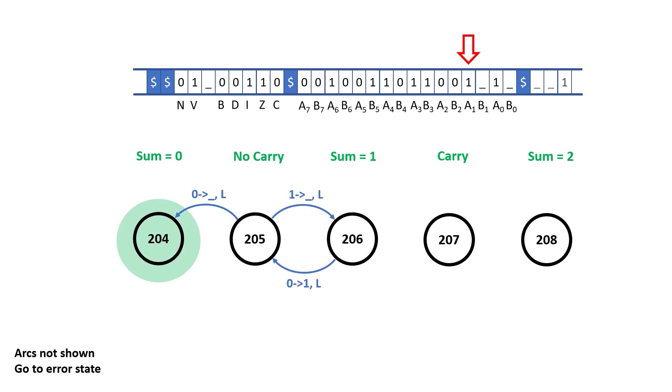Now I see a one, I find an arc for that. This tells me to write a one, go left and move to rule 205. Now in rule 205 I see a zero and an arc for zero is already there. I follow this which tells me to write an underscore, move left and go to rule 204.